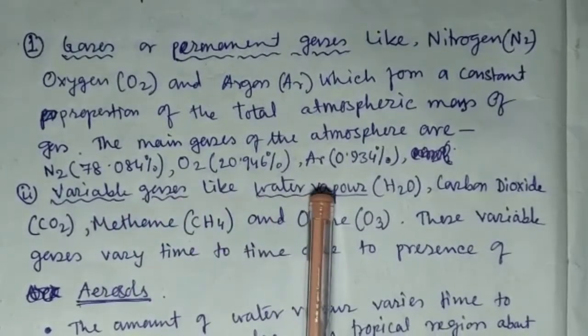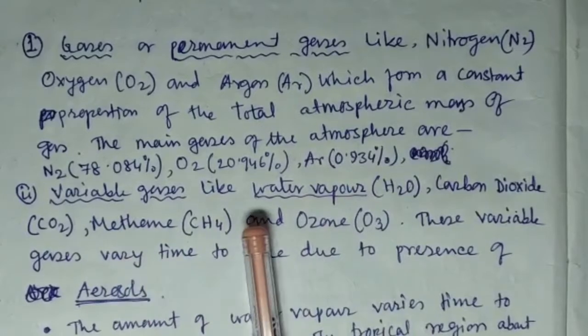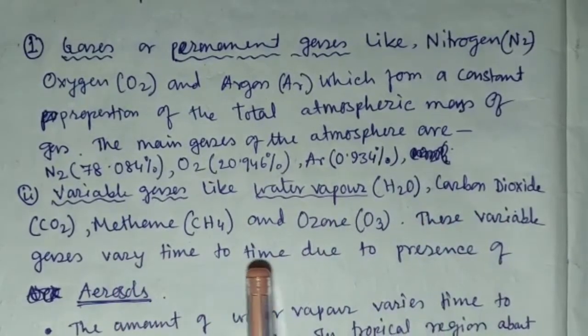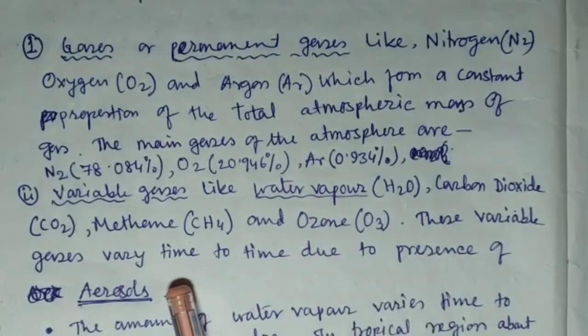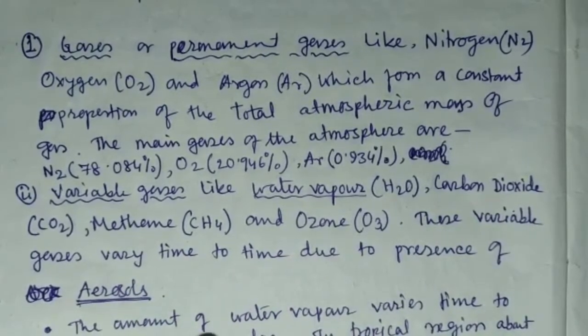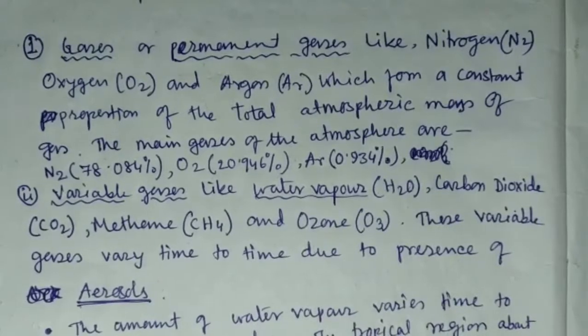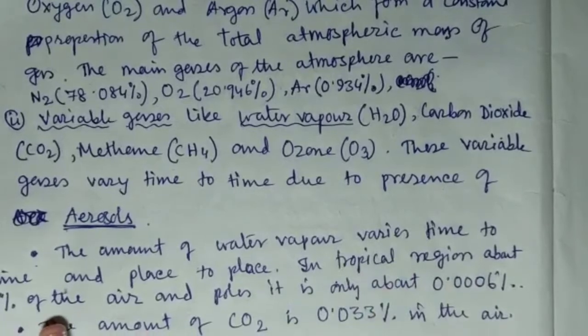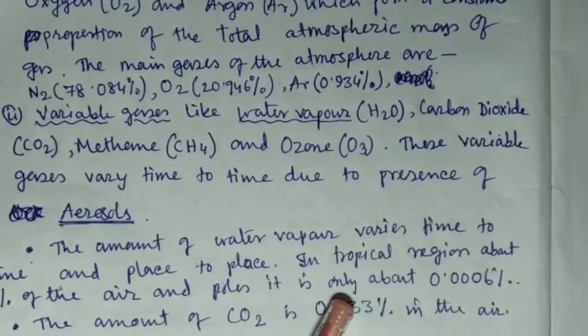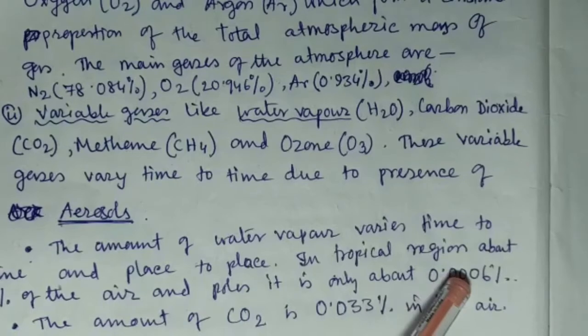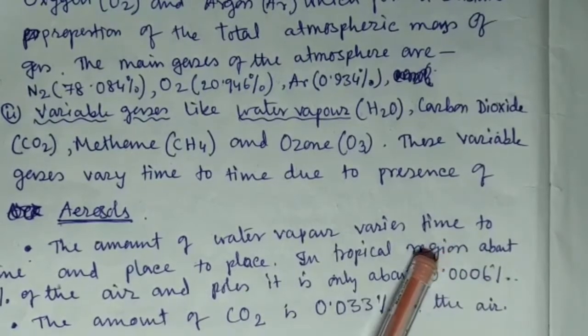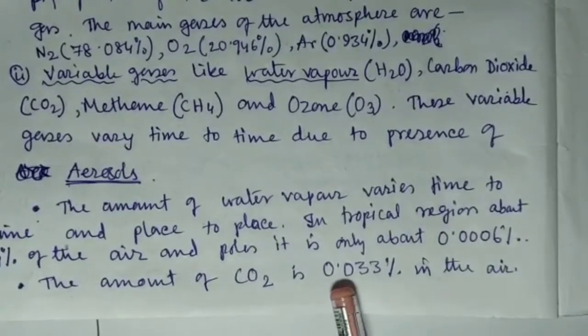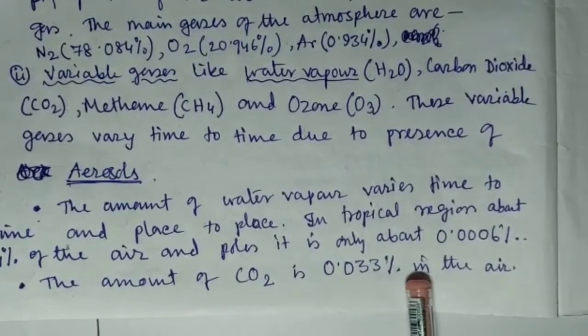Water vapour, carbon dioxide, methane and ozone are variable gases that vary time to time due to presence of aerosol. The amount of water vapour varies time to time and place to place: in tropical region about 4% of the air and at poles only about 0.0006%. The amount of carbon dioxide is 0.033% in the air.